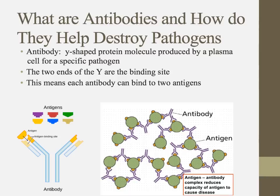Antibodies are always Y-shaped proteins with a specifically shaped binding site that will only bind with one antigen — like a lock and a key. Because they're Y-shaped, they can bind to two antigens — not two different ones, but two of the same. This allows them to create a network, sticking to more than one antigen and clumping them all together.